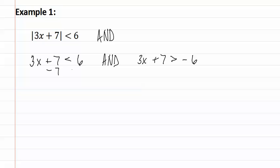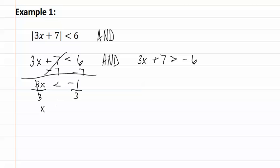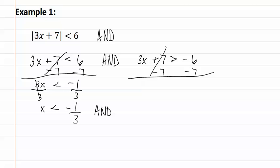We now start to solve. By subtracting seven from each side, we get 3x is less than negative one. We then divide each side by three, giving us x is less than negative one-third. And then we solve the second one, giving us 3x is greater than negative thirteen. Divide each side by three, and we get x is greater than negative thirteen-thirds.